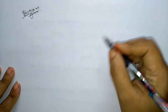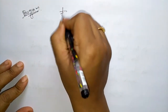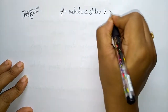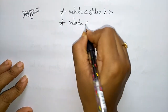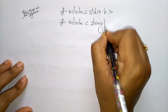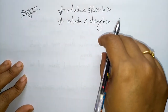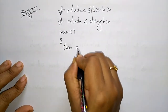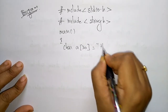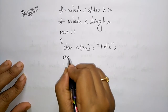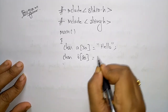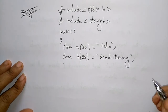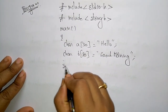Let me explain with a program example for strncat. First I will write hash include stdio.h for all input/output functions. Since I am using strncat, I will include string.h as well, because the definition of that function is present in string.h. In main, I declare char a[30] with value "hello" and char b[20] with value "good morning" — these are the two strings to be concatenated.